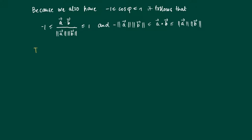Here we have a geometric proof of the Cauchy-Schwarz theorem, which is an important one. It is a geometric proof because we used the cosine rule.